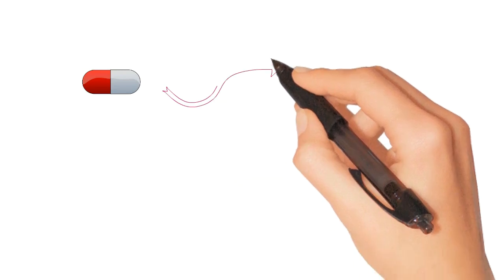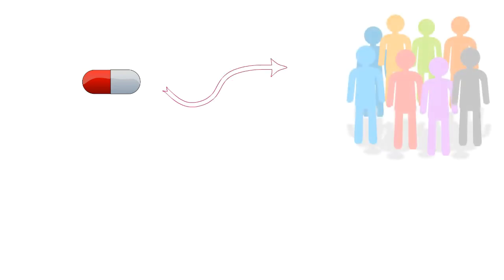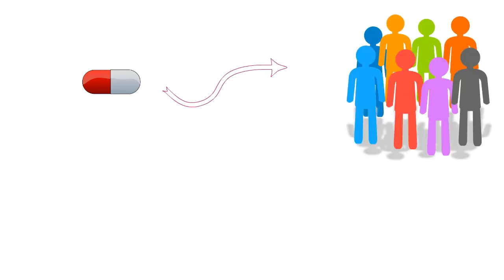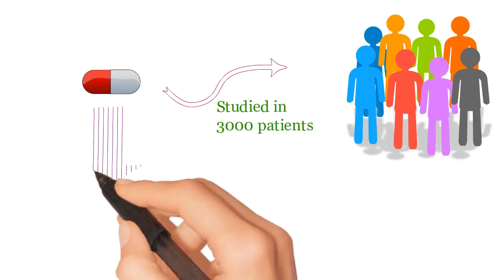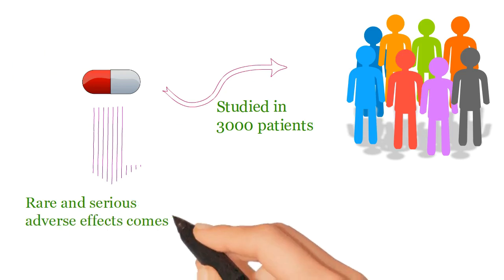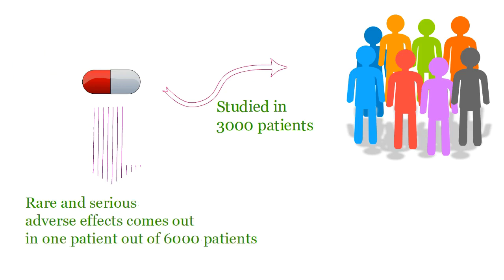Suppose drug X has been studied in 3,000 patients before getting approval for marketing. But what about rare and serious adverse effects that can be seen only in, let's say, 1 out of 6,000 patients? You can't study that adverse effect in a trial of 3,000 patients. This makes sense, as the whole population cannot participate in an experiment. Exactly.